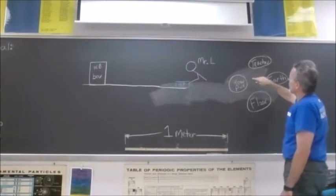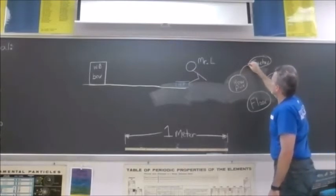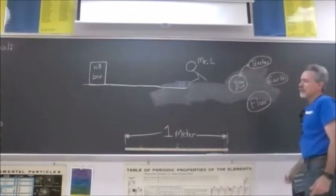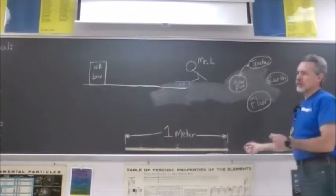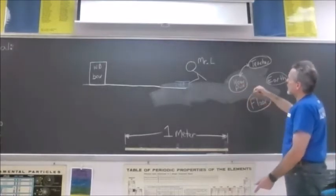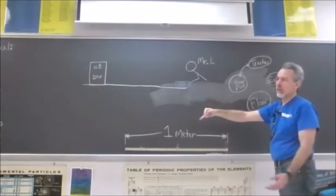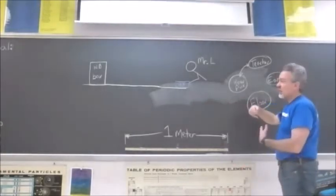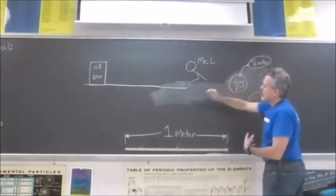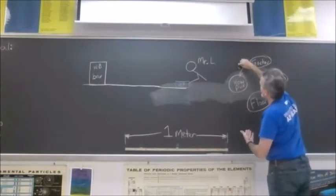The hover puck and the teacher are interacting with one another, so we draw a double-headed arrow, which represents a force interaction. In this case, I'm pushing the hover puck, but you can't be touched without it touching you back. I'm touching the hover puck, but the hover puck is also touching me, so there's a push between the two of us.